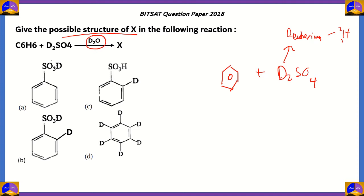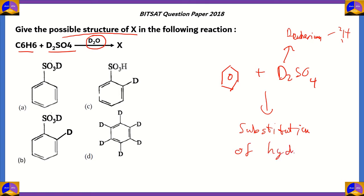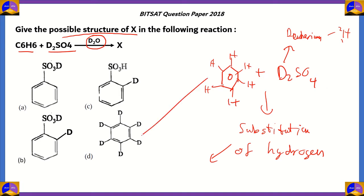In this scenario, substitution occurs: the hydrogen atoms present in benzene are replaced by deuterium. In benzene, all six carbon atoms each have one hydrogen, and these hydrogens are replaced by deuterium. Therefore option D becomes the correct answer.